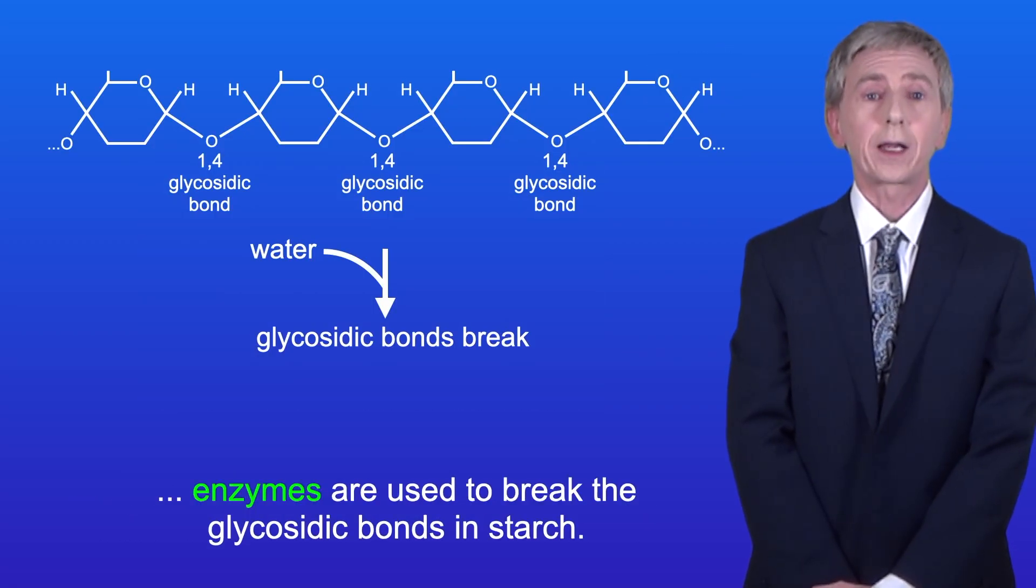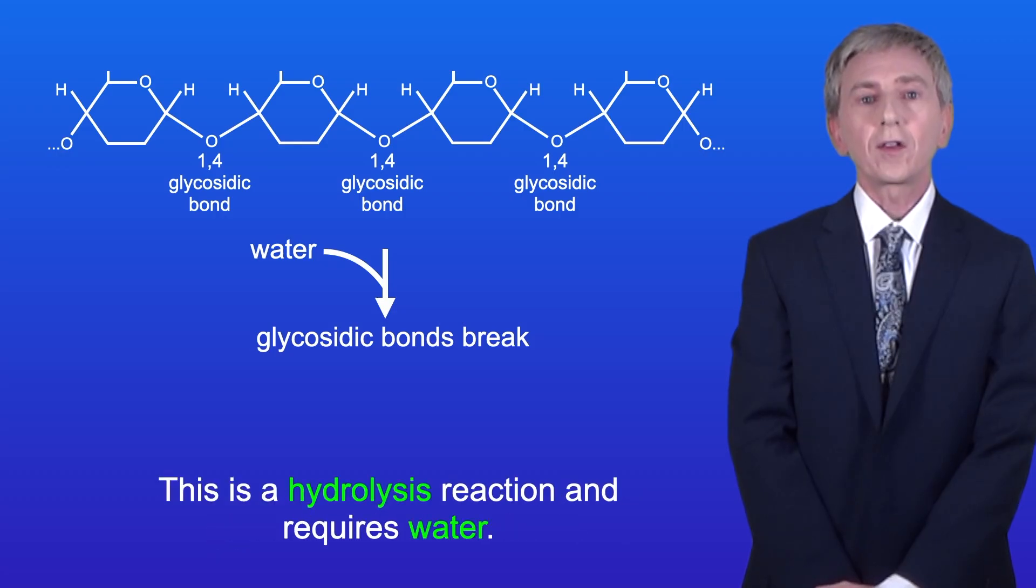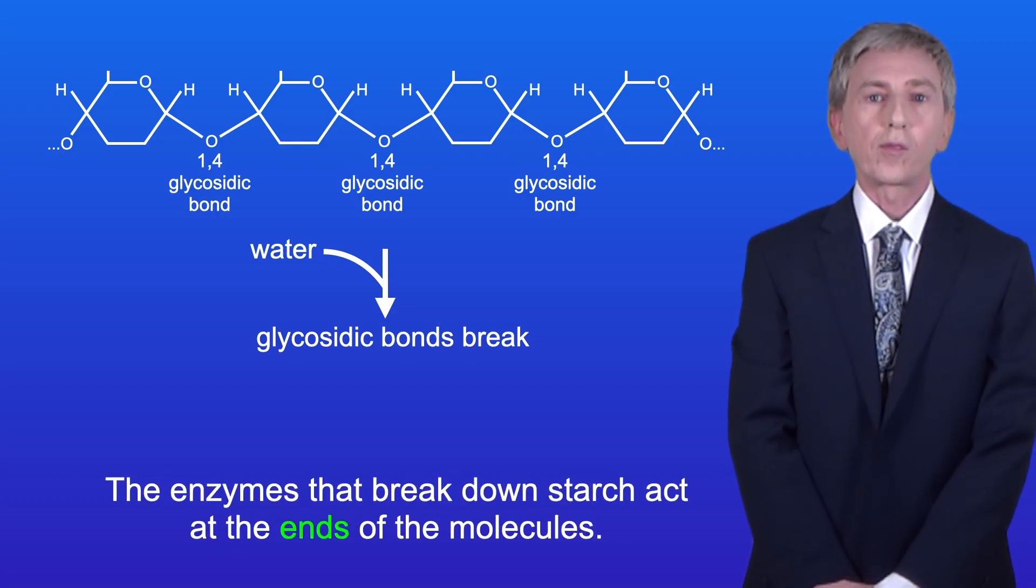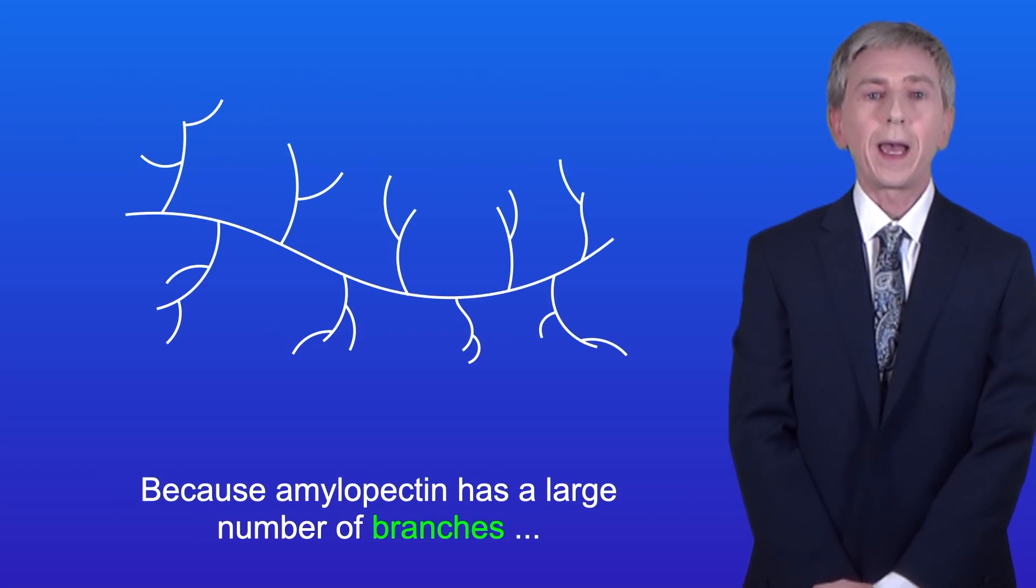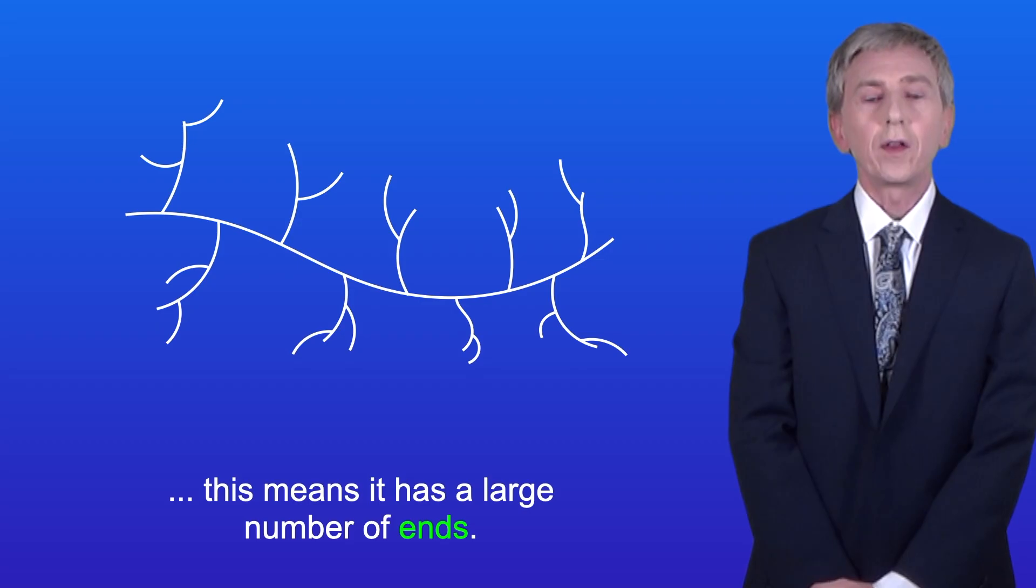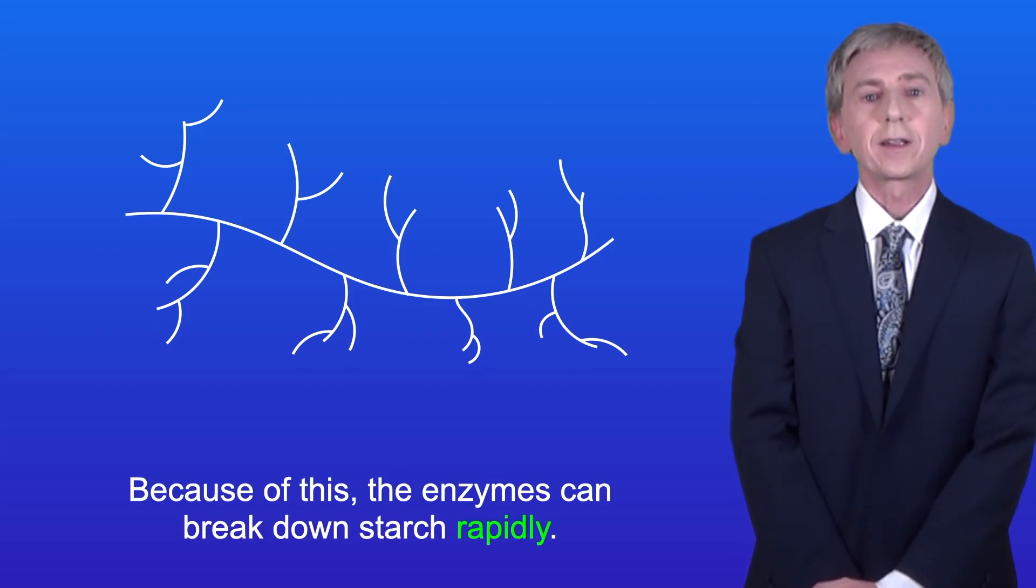This is a hydrolysis reaction and requires water. The enzymes that break down starch act at the ends of the molecules. Because amylopectin has a large number of branches, this means it's got a large number of ends, and because of this the enzymes can break down starch rapidly.